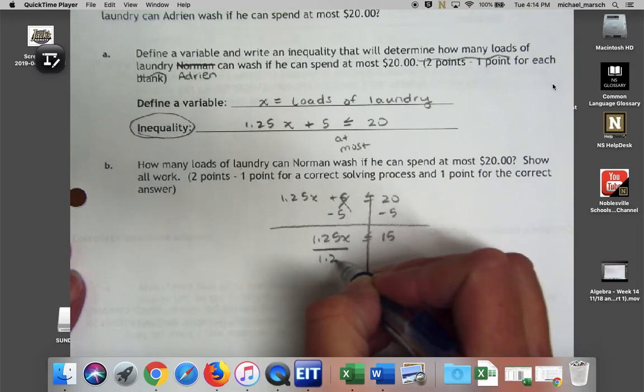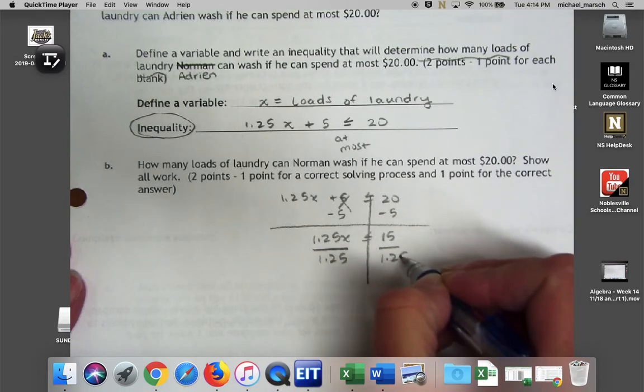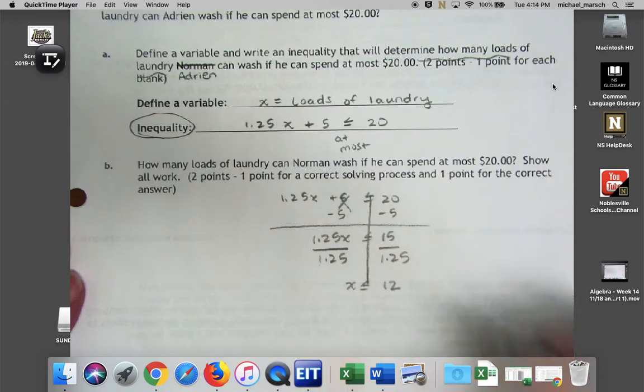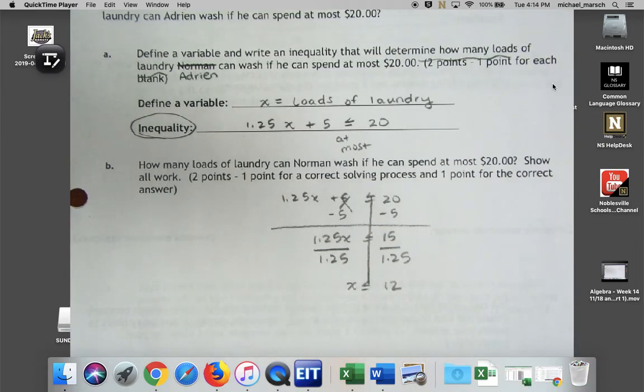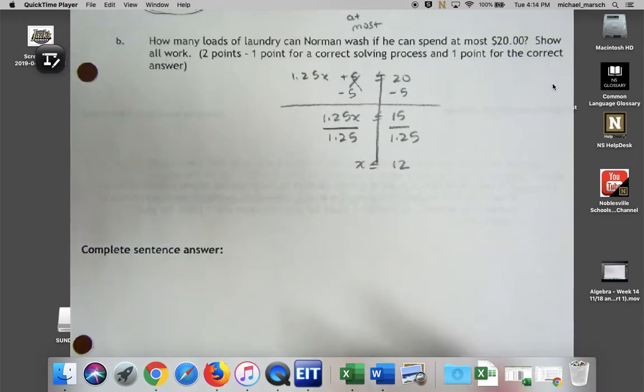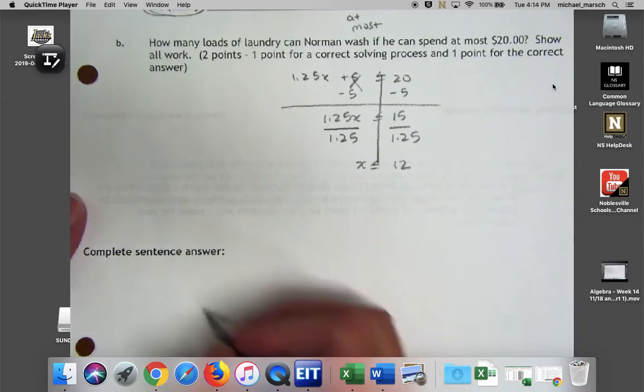Divide by 1.25, divide by 1.25. I believe you get x is less than or equal to 12. Let me double check on my calculator. I don't want to lead you guys astray. 15 divided by 1.25 is 12, so I have my answer.